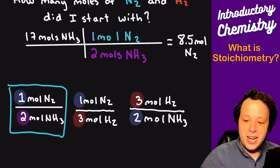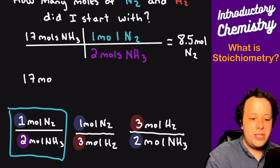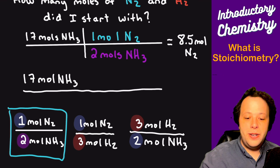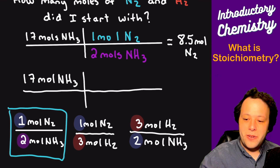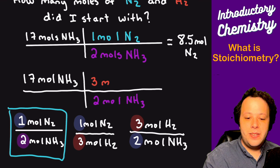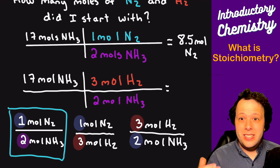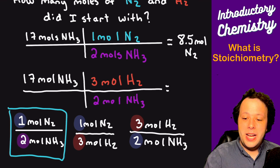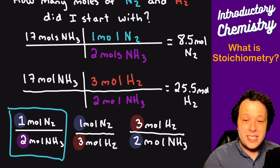Now what about hydrogen? Starting again with 17 moles of NH₃, we use the relationship from the chemical equation: for every two moles of NH₃ there are three moles of H₂. So 17 times 3 divided by 2 gives us 25.5 moles of H₂. From there, if you need to find the mass or the volume in liters of gas, you can do follow-up steps — which I cover in my other videos.